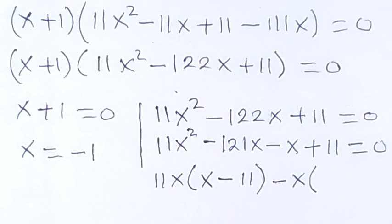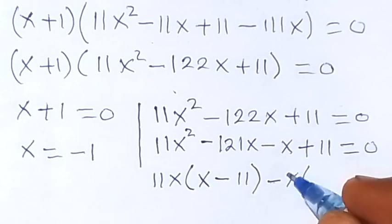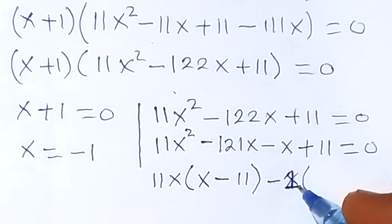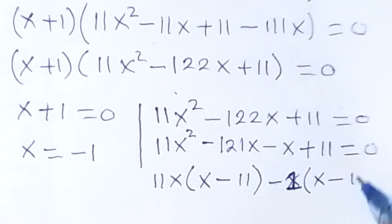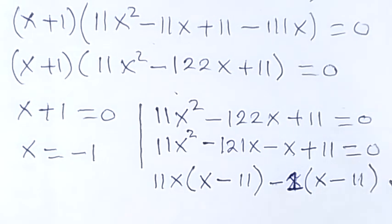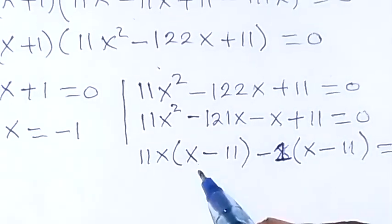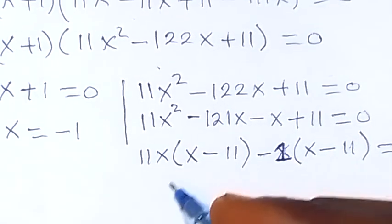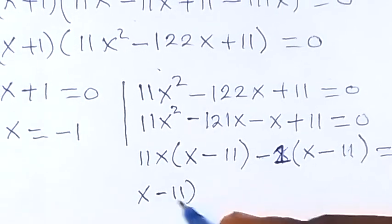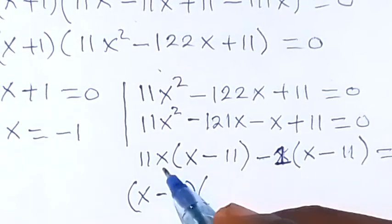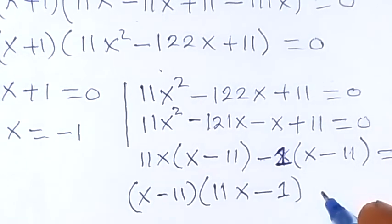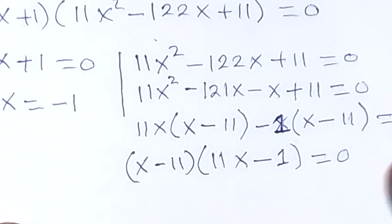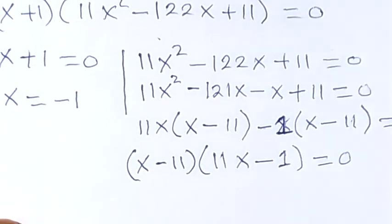Minus 1 is common from the second group, leaving (x − 11). So we have (x − 11)(11x − 1) = 0, giving two further cases: x − 11 = 0 or 11x − 1 = 0.